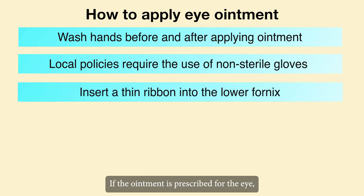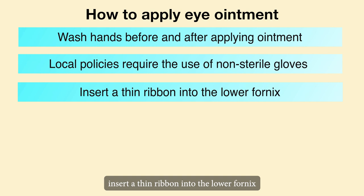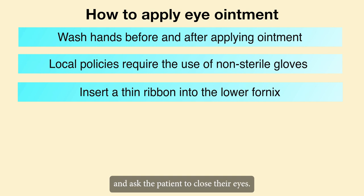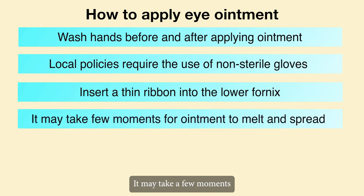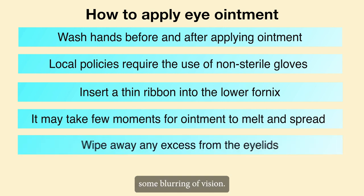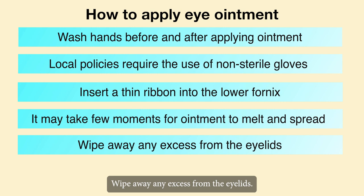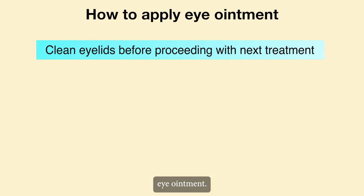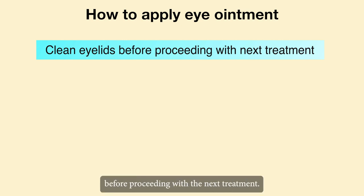If the ointment is prescribed for the eye, insert a thin ribbon into the lower fornix and ask the patient to close their eyes. It may take a few moments for the ointment to melt and spread over the eye, and it may initially cause some blurring of vision. Wipe away any excess from the eyelids. When a patient is prescribed eye ointment, it is customarily necessary to clean the eyelids before proceeding with the next treatment.